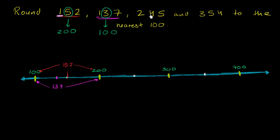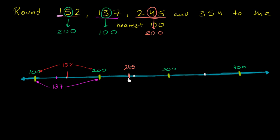Let's do the same thing with 245. 245 is right around here — just below 250. Applying the rule: rounding to the nearest 100, we look at the tens place. If it's greater than or equal to five we round up; if it's less than five we round down. Here the tens place is 4, so we round down to 200. Our two options were 200 and 300, and we're clearly closer to 200.